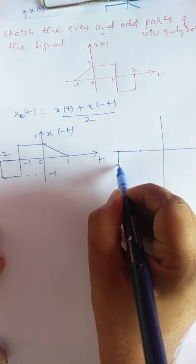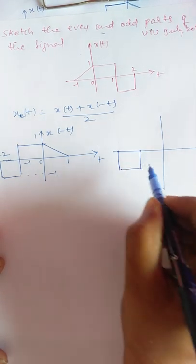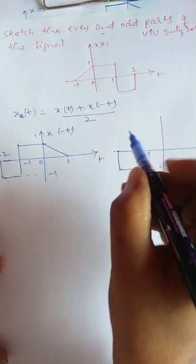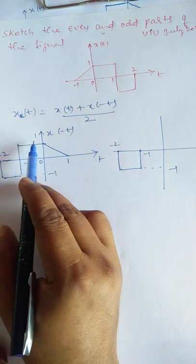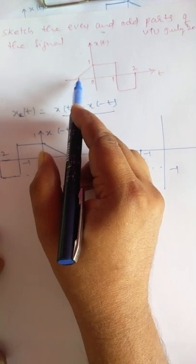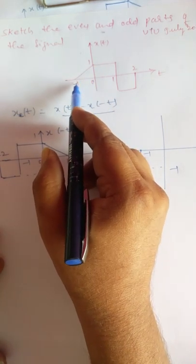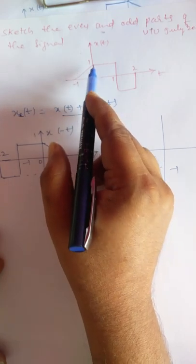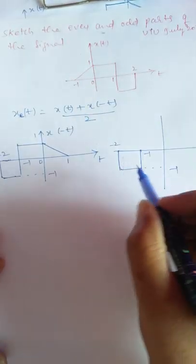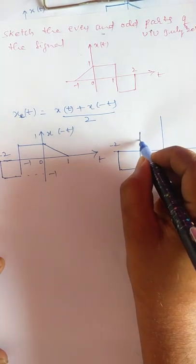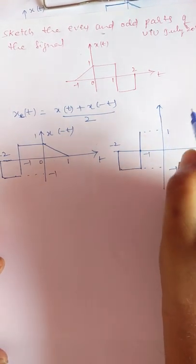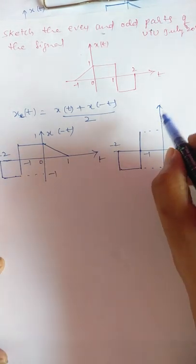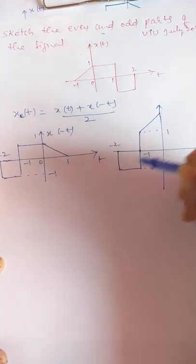So we draw that signal: from minus 2 to minus 1, only x(-t) exists. Next, from minus 1 to 0: this signal value is 1, whereas x(t) is an increasing line starting from 0 at t = minus 1 and reaching 1 at t = 0. That constant 1 is added with this line, so at minus 1 the value is 1, and it increases. Finally at 0, both values are 1, so the sum reaches 2.